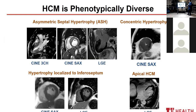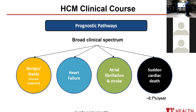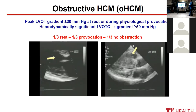From the clinical perspective, patients have a broad clinical spectrum. For the most part, this is a benign condition and patients can have normal longevity. Some patients present with heart failure symptoms, some with atrial fibrillation and stroke — which happens in about 20% of patients — with an incidence of about 1% per year. Heart failure symptoms include those related to congestion, low output, and also symptoms related to LVOT obstruction.